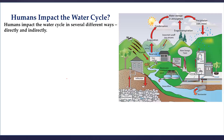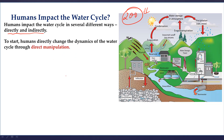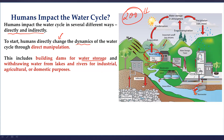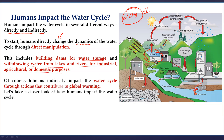Let's understand how humans impact the water cycle. All our activities — from urban to rural — are related to water. But after the industrial revolution, in the last 200 years, we have changed the pattern of utility and that's where the problem lies. Directly or indirectly, we have been crossing paths with the hydrological cycle's natural balance. Humans directly change the dynamics of the water cycle through direct manipulation: creating reservoirs, changing the catchment area of rivers, polluting them, building dams for water storage, and withdrawing water from lakes and rivers for industrial, agricultural, and domestic purposes.